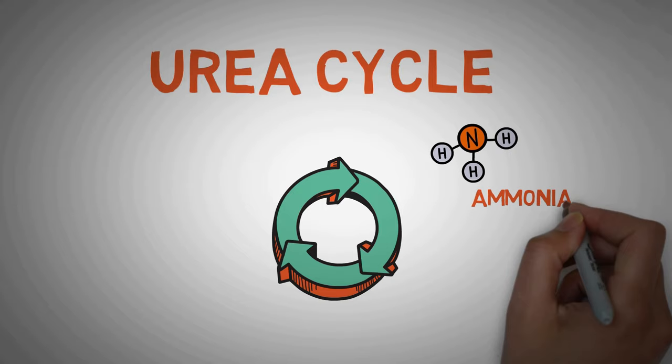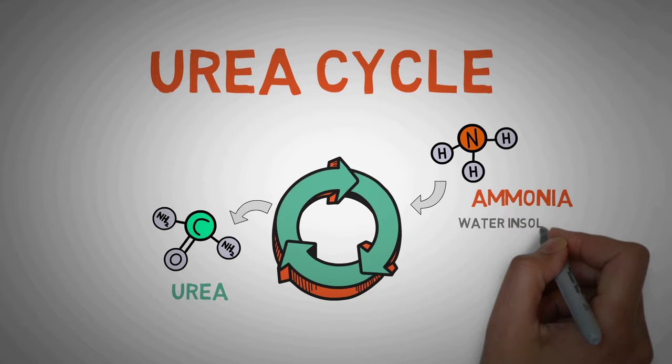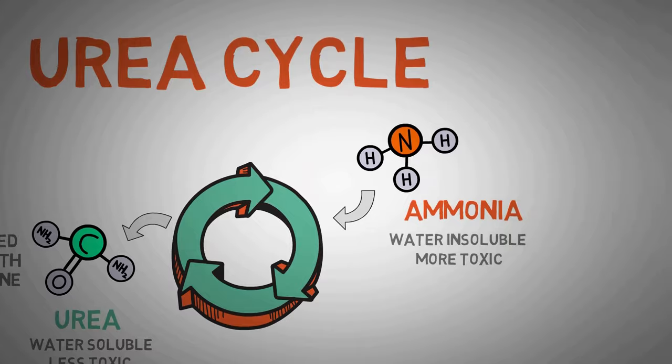In simple words, urea cycle is a biochemical pathway that converts the ammonia present in our body to urea. This is done mainly because ammonia cannot be dissolved in water easily and is a toxic compound while urea can be easily dissolved in water and is a far less toxic compound than ammonia. What does that mean? It basically means that you can excrete urea in your urine and not ammonia.